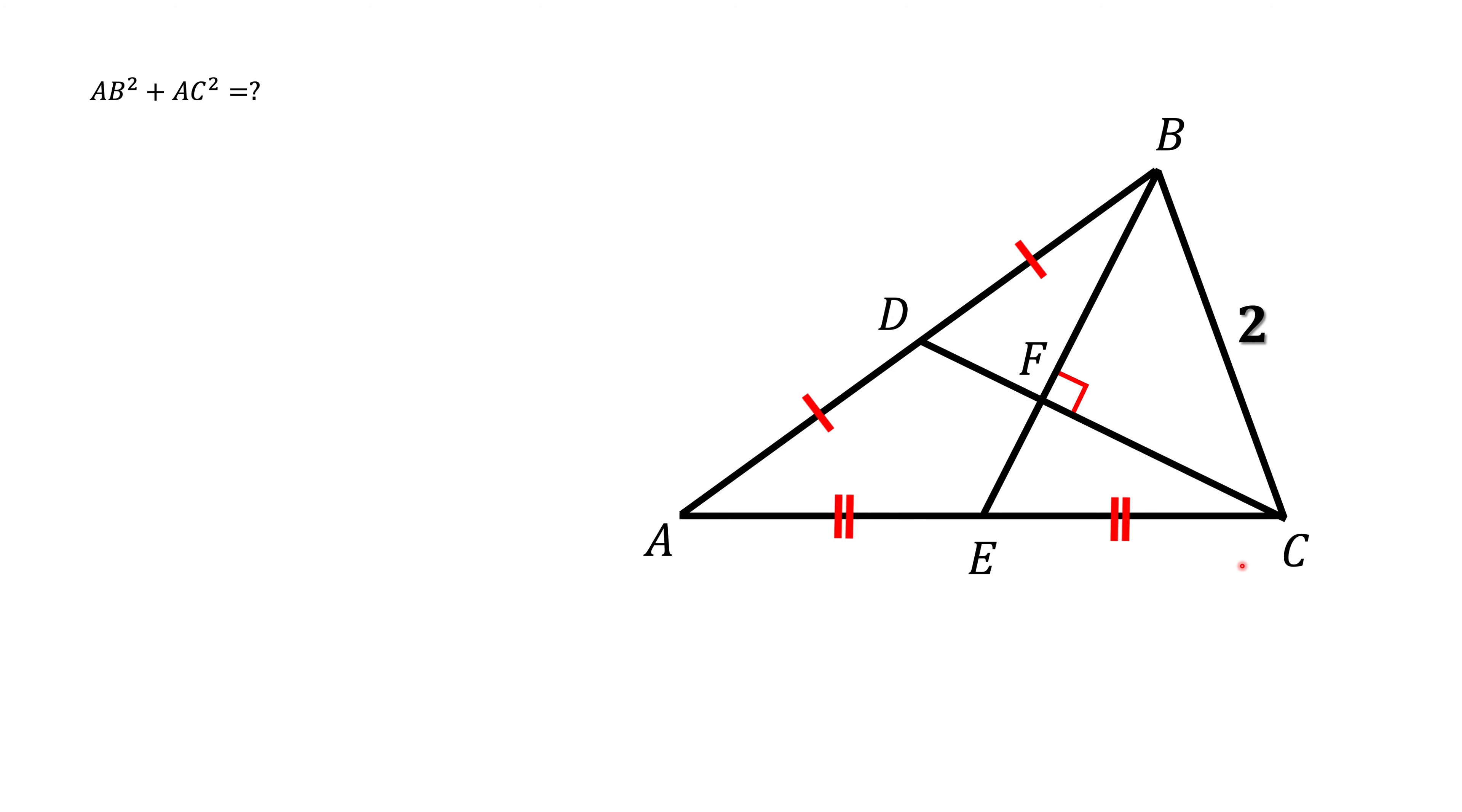Here we have a triangle ABC. We know one side of this triangle, side BC, equals 2.